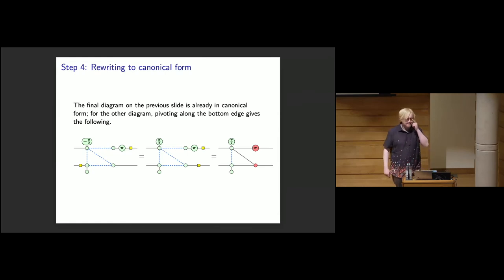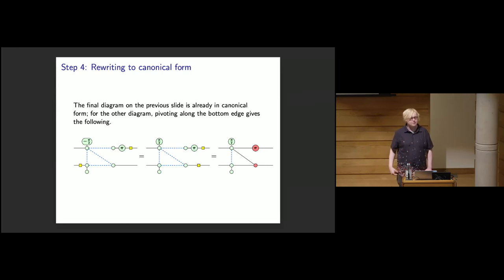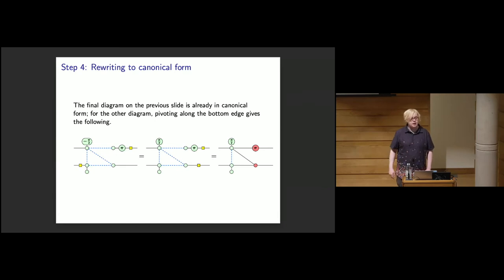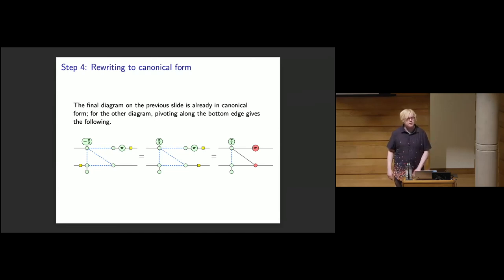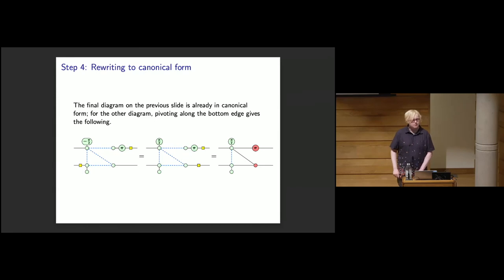Question: Does the inverse Z-deletion always preserve Pauli flow, even for a general Clifford diagram? Response: Yes — it was proved for the general case including planar measurements. For any general MBQC diagram, you can always insert Z-measured vertices connected to any set of vertices, and this will always be deterministically correctable. The proof is fairly simple and is in the paper.